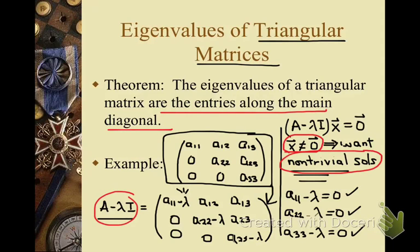To restate: if lambda equals A11, then that diagonal entry becomes 0, making x1 a non-pivot column and giving non-trivial solutions. Likewise, if lambda equals A22 then column 2 is non-pivot, and if lambda equals A33 then column 3 is non-pivot. In each case we end up with non-trivial solutions for (A minus lambda I)x equals 0.